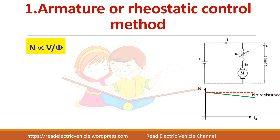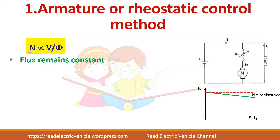First we will see about the armature or rheostatic control method. We know N is directly proportional to V and inversely proportional to flux. Since this is a shunt motor, the flux will remain constant. So we can write N is directly proportional to V. So we have to vary the voltage applied to the armature so that the speed will change.